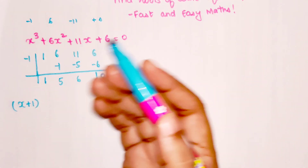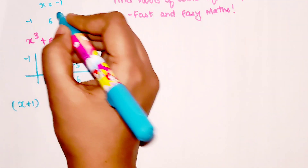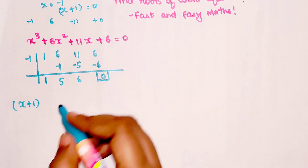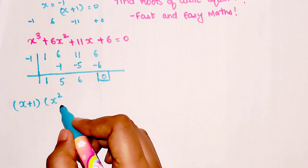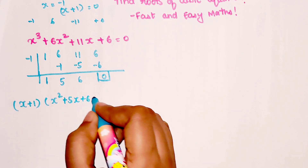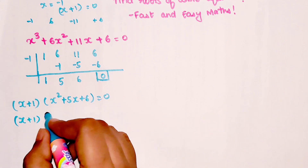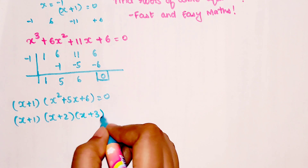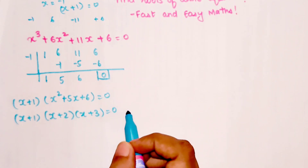So x plus one is one of my factors, because x equals minus one means (x + 1) = 0. The remaining part is a quadratic: x² + 5x + 6 = 0. Factorizing quickly gives (x + 2)(x + 3) = 0. That is the complete factorization of this cubic equation.